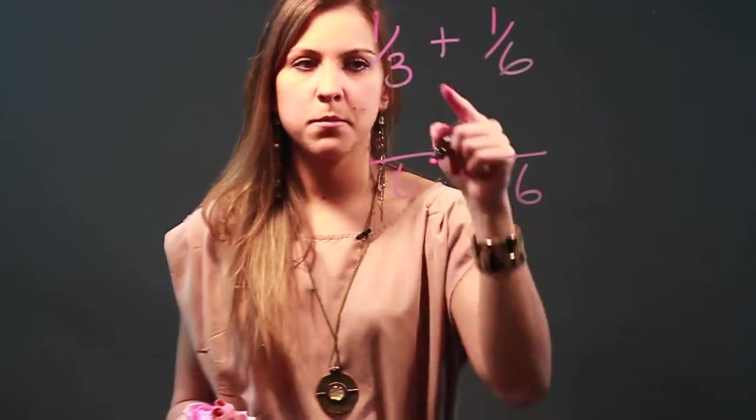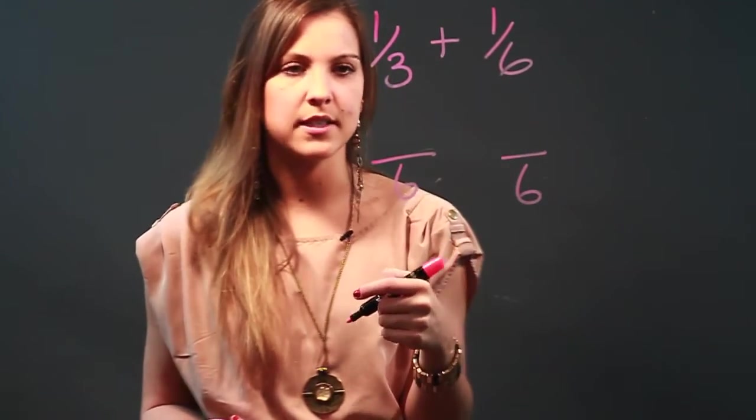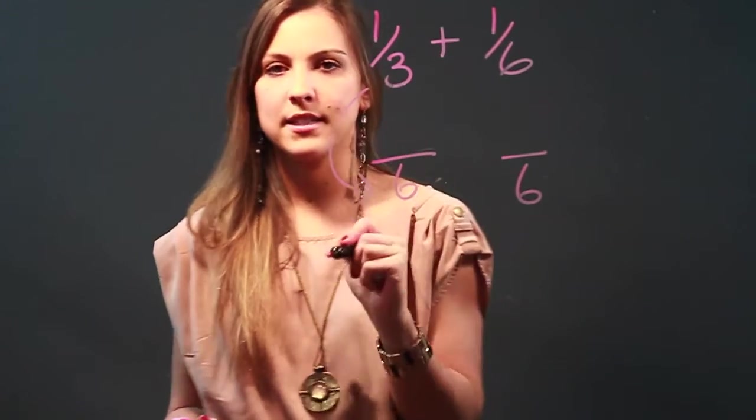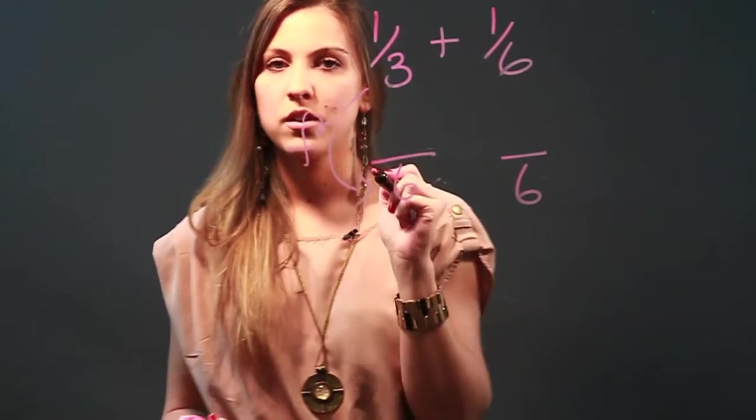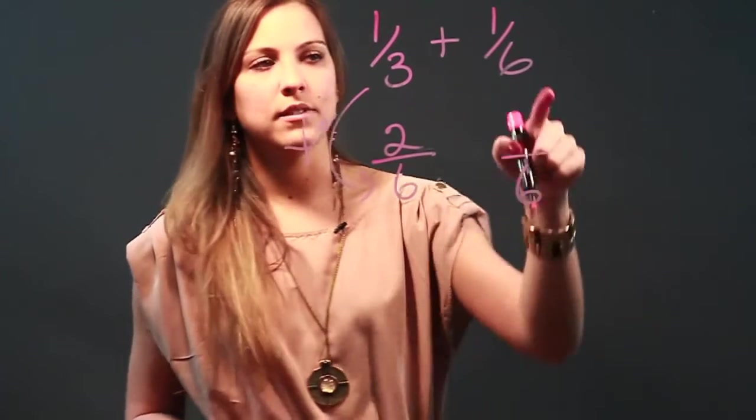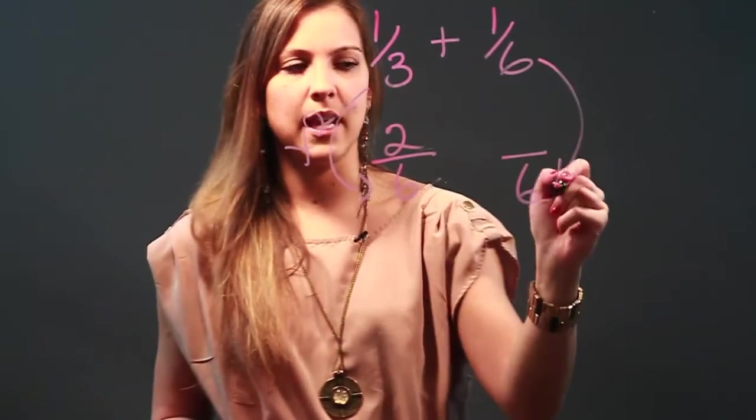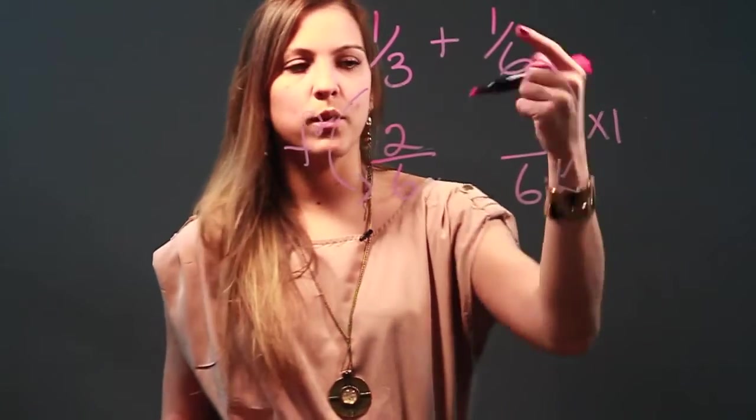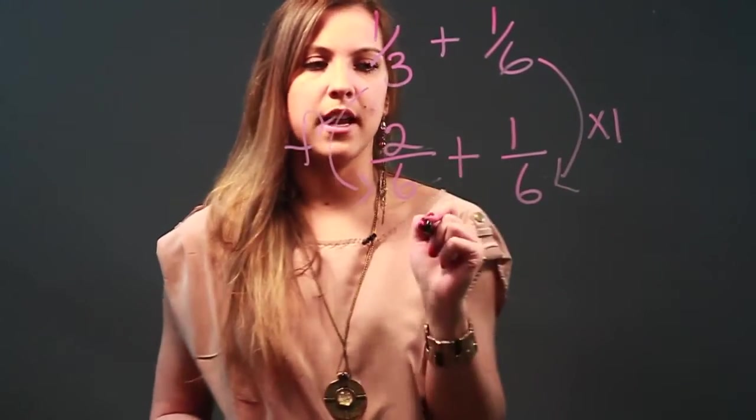So I'm going to change both of these fractions so that they both have the denominator 6. Now, how did I get from 3 to 6? Well, I did times 2. So I'm going to have to do 1 times 2 to get my numerator. Now, to get from 6 to 6, I kept it the same, right? I just did times 1. So 1 times 1 is just 1. And bring down my plus sign.